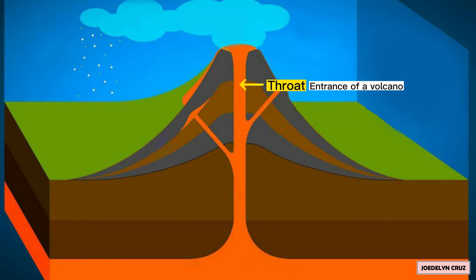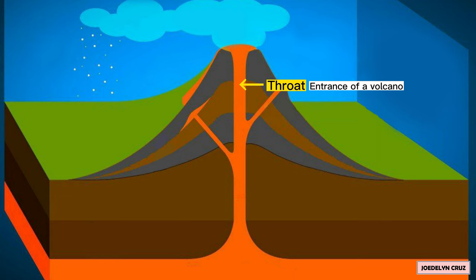Throat. Throat is an entrance of a volcano, the part of the conduit that ejects lava and volcanic ash.